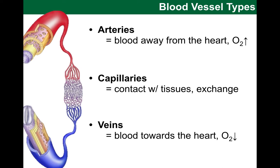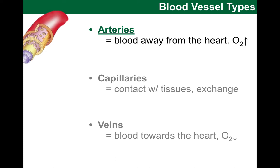Let's start with arteries. These are the vessels that arise directly from the heart. When the heart squeezes out blood, it leaves the heart with high pressure in a pulsatile manner, and the walls of these initial arteries must be adapted to this. The high pressure of blood being squeezed out must be tolerated by these vessels, and over the distance before the blood reaches the capillaries, this high pressure with pulsatile flow must be evened out.